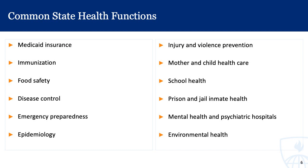Additional state health functions include emergency preparedness, general epidemiology at the state level, injury and violence prevention, mother and child health care, school health at both the primary and university levels, prison and jail inmate health, mental health and some state-run psychiatric hospitals, as well as regulating environmental health generally.